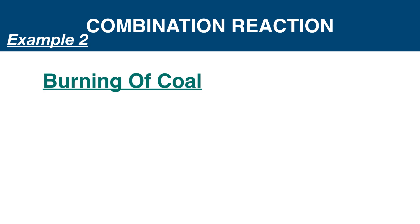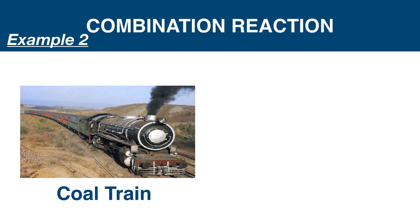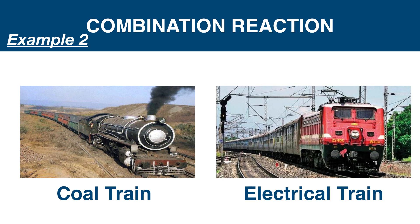The next example is burning of coal. Coal contains 95% carbon. Burning of coal means reaction of carbon and oxygen in the atmosphere to form carbon dioxide with a large amount of heat. This large amount of heat is used in coal trains as fuel. The excess amount of carbon dioxide causes pollution, so electric trains were invented.